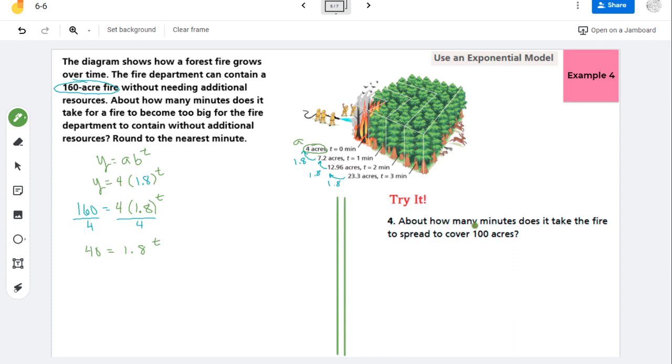And so now what I'm going to do is I'm going to take the log from each side. Now 1.8 and 40 don't have anything in common. So when I take the log, I'm just taking the common log. So I have that the log of 40 is equal to, and I'm going to use the power property to pull the T out front, T times the log of 1.8. And then to get T alone, I just divide by that log of 1.8.